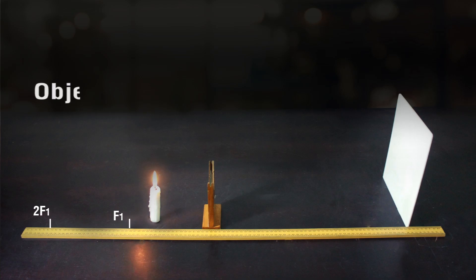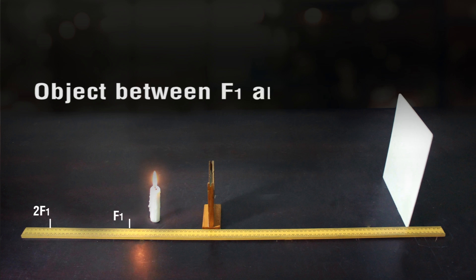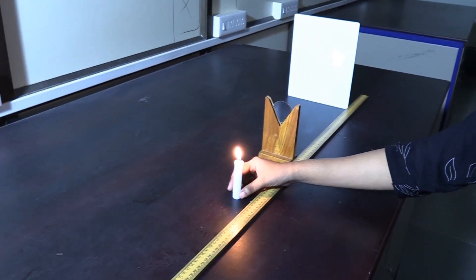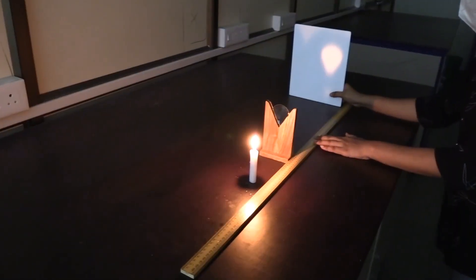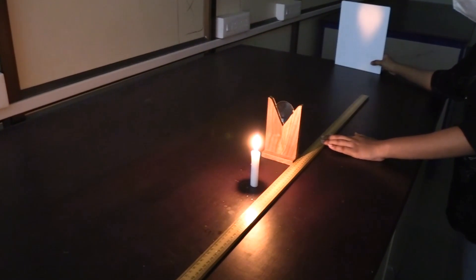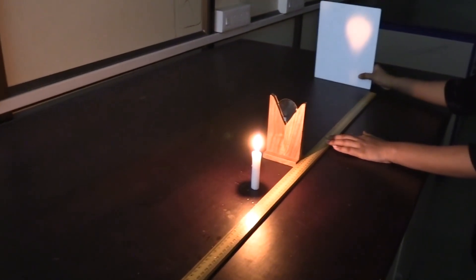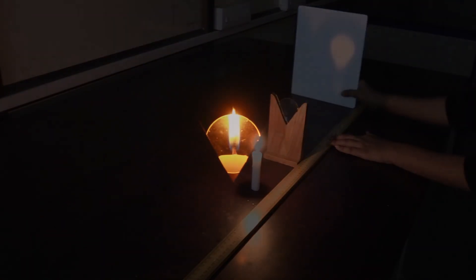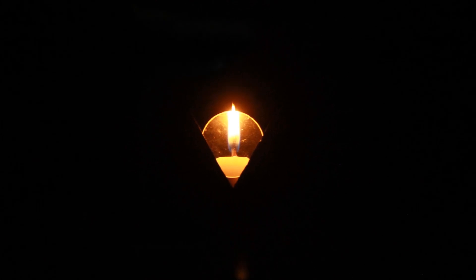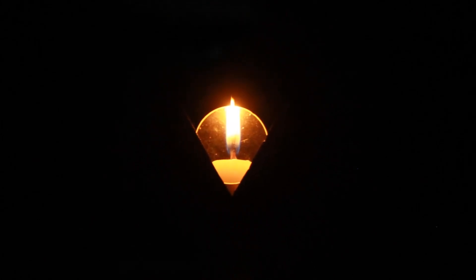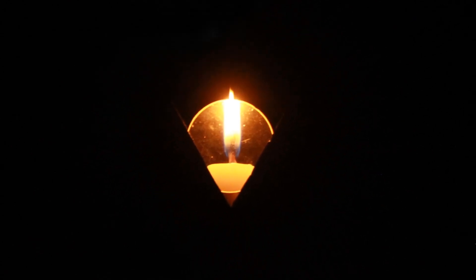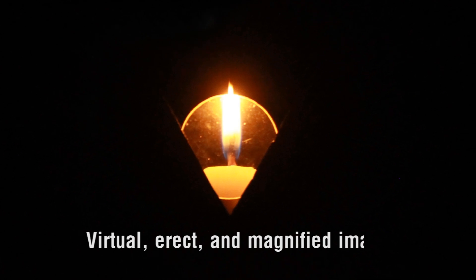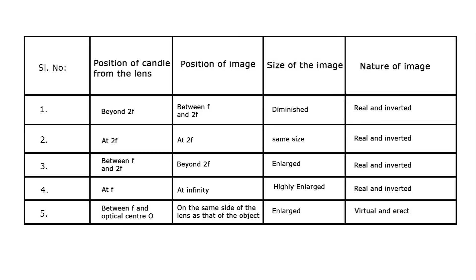Case 5 — Object between F1 and O: Place the candle at a distance between F1 and O and move the screen back and forth. Notice that no image will be obtained on the screen. Now look at the candle flame through the convex lens and observe the nature of the image. Note that the image formed is virtual, erect, and magnified. Record the entire observations in the table.